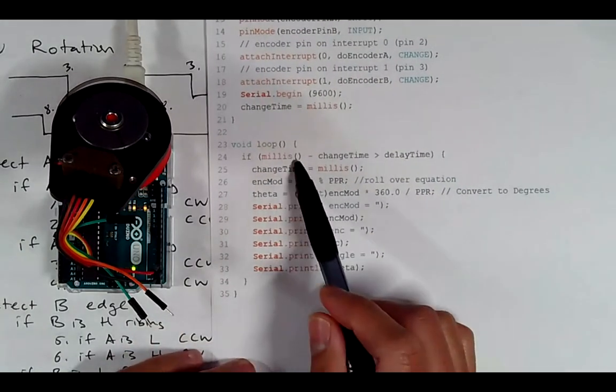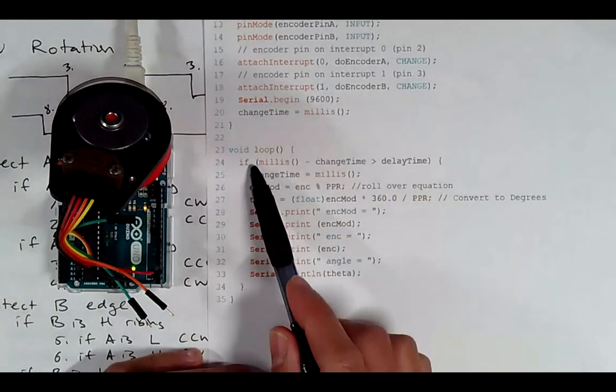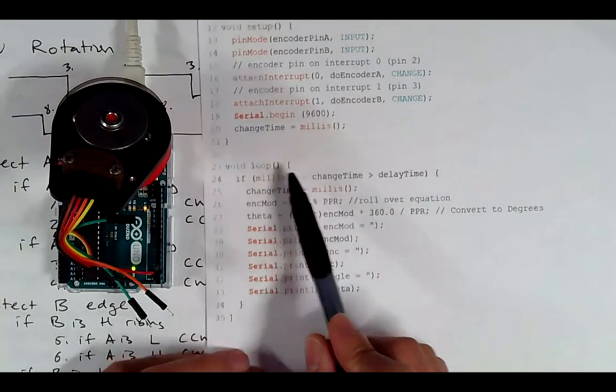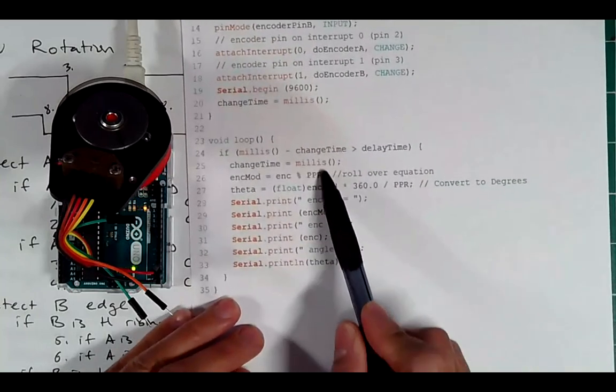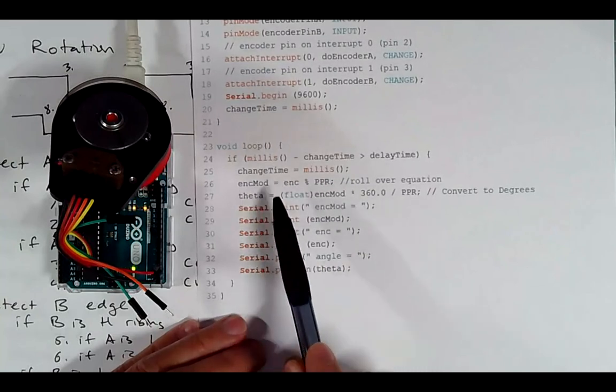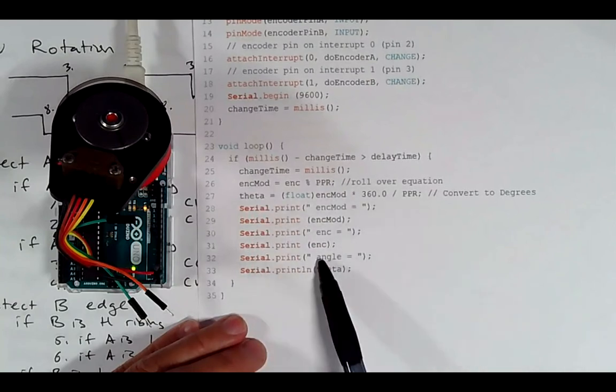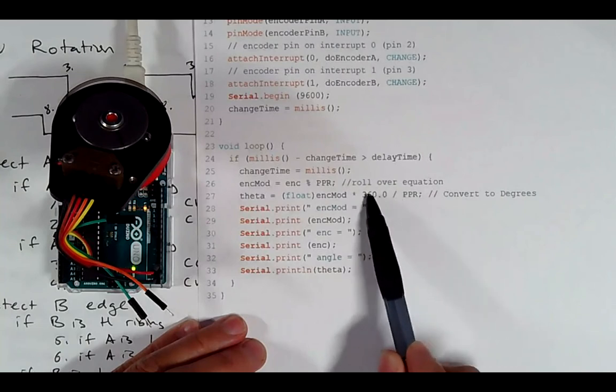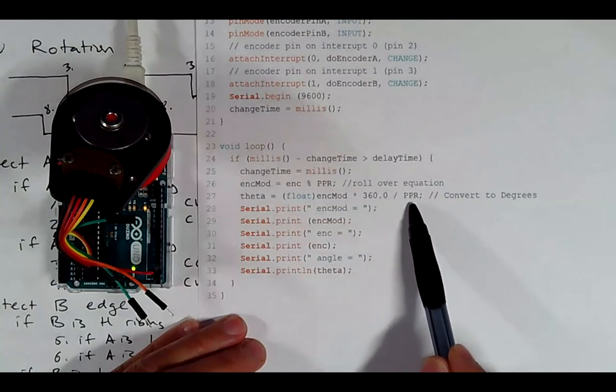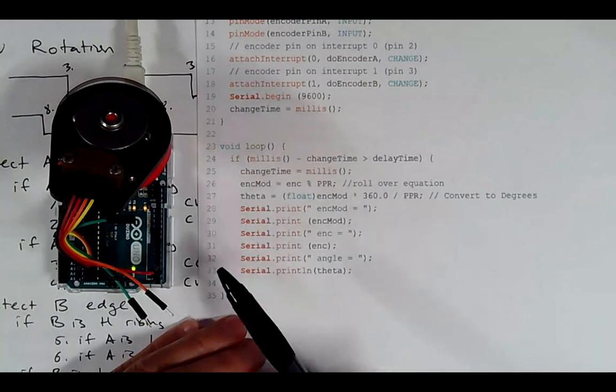Set up the serial monitor to see the number and millies. Now, the loop is super simple. Notice I don't have to have any recording of A and B. That's all handled in my attach interrupt. So what is this saying? It's saying if millies minus change time is greater, send delay. Essentially it's saying every hundred milliseconds, do this. Every hundred milliseconds, roll over the encoder mod, convert it to angle, and print it out. So simple here. And notice this is just our conversion to degrees. That's it. And because we have PPR is 10,000, there's 10,000 pulses per revolution, this will convert that encoder mod to an angle that we know.